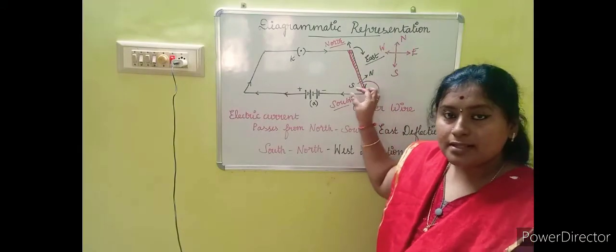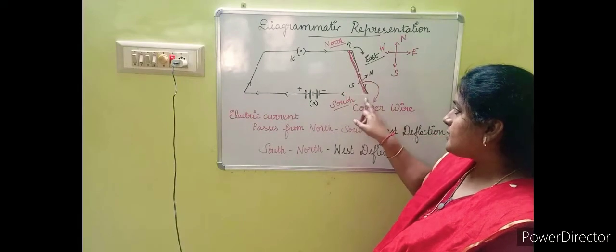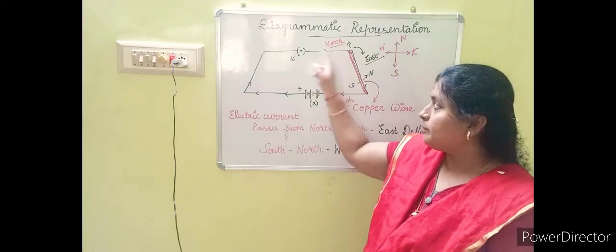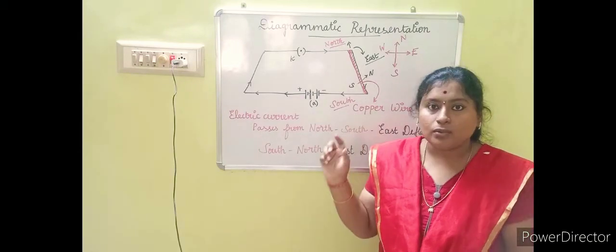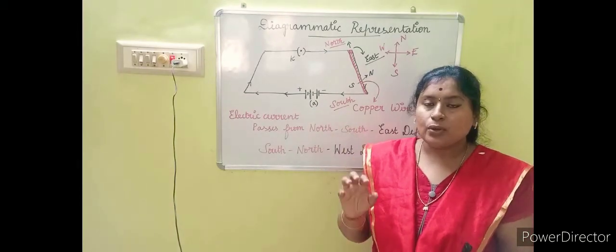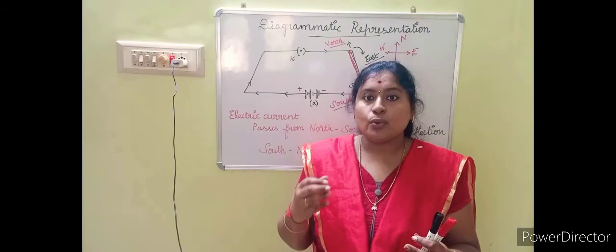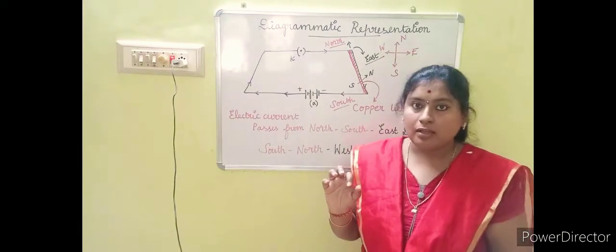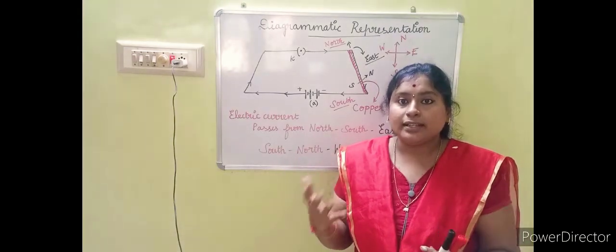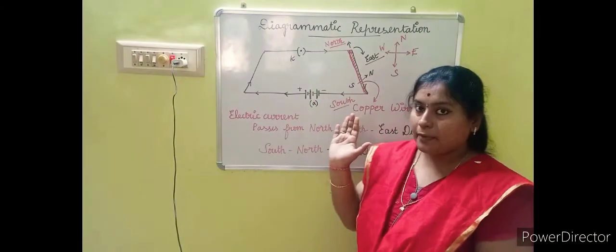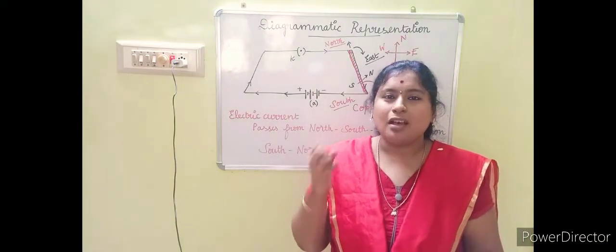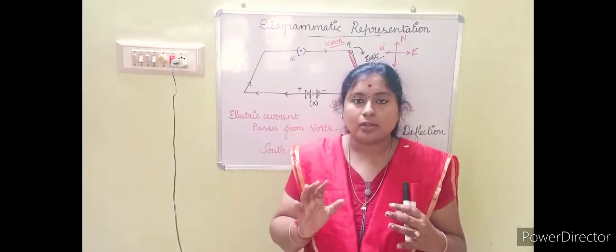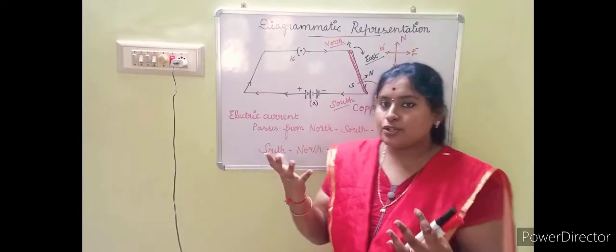This segment represents the copper wire — this is the north end and this is the south end of the copper wire attached to the circuit. An important component is the compass needle, which should be placed near this copper wire. Only if the placement is close can it detect the magnetic field being produced around the copper wire. If it is far away, it cannot accurately detect the changes occurring during the experiment.